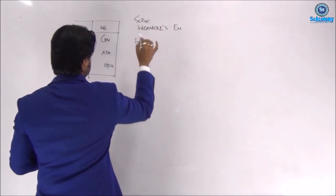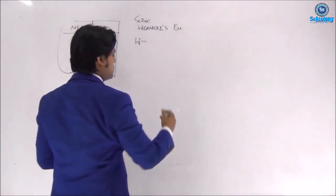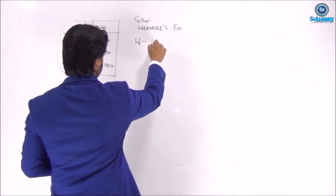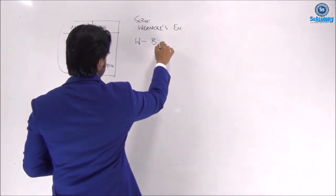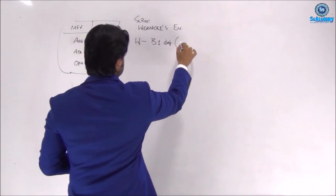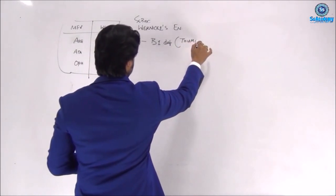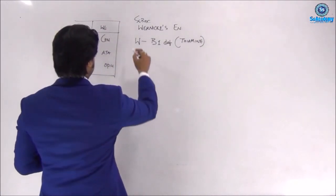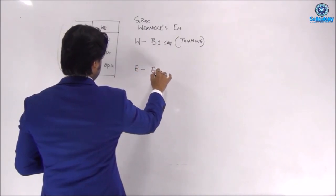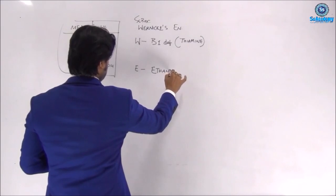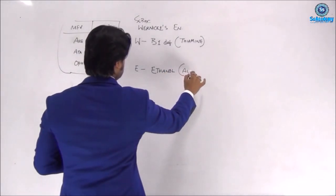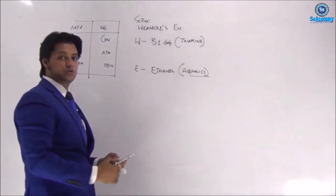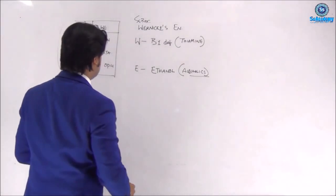Now let's build the mnemonic box for WERNICKE. Starting with W: W stands for Wernicke's encephalopathy. B — because if you write Wernicke's, the W can remind us — B is for B1, meaning vitamin B1 deficiency, which is thiamine deficiency. E is for ethanol: alcohol is responsible for development of this neuropsychiatric syndrome.